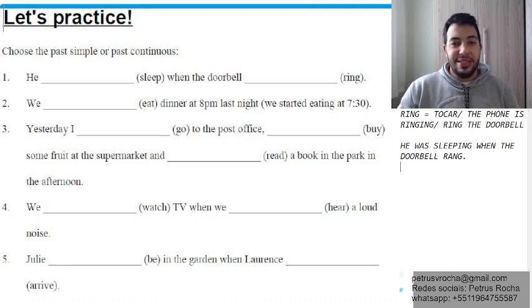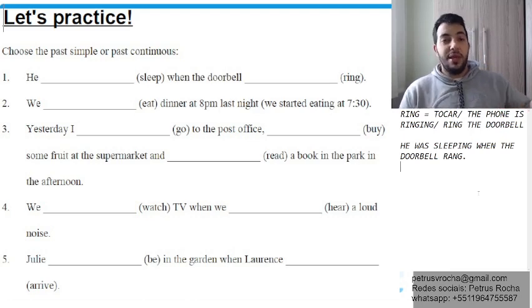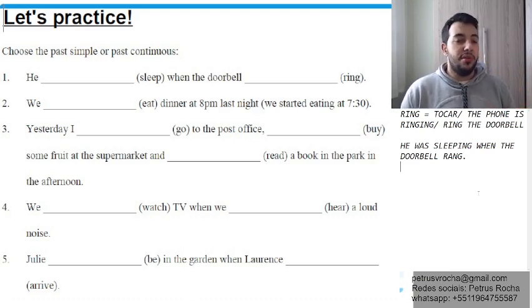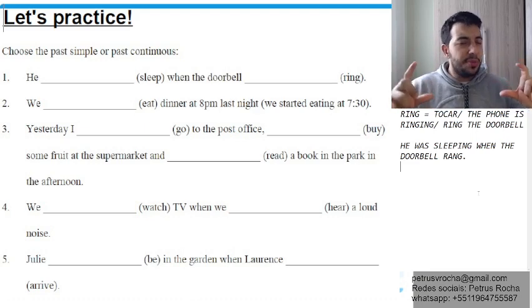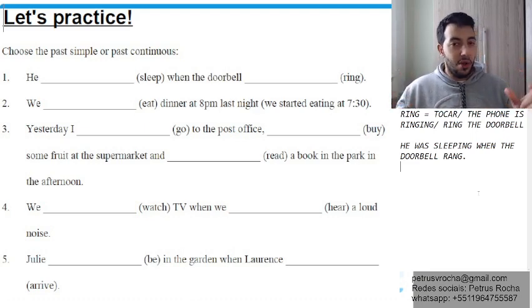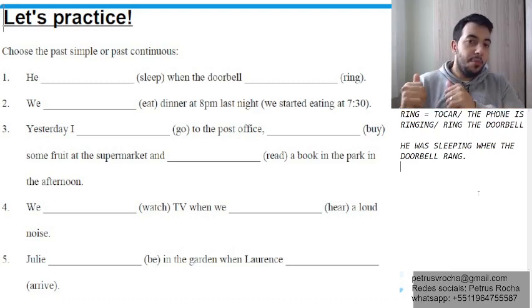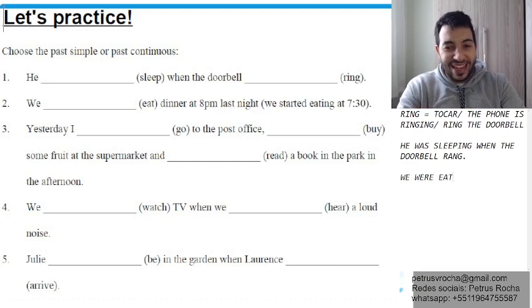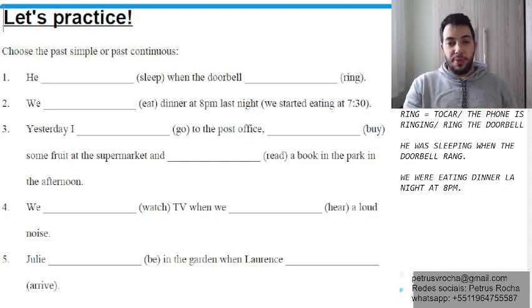Number two — we eat dinner. We eat dinner at 8pm last night. We started eating at 7pm. Temos um momento específico que é last night, às 8 da noite. É mais correto dizer: nós estávamos comendo um jantar às 8 horas na última noite. Indica uma ação que teve um progresso durante um tempo. Nesse caso, past continuous — nós estávamos comendo um jantar na noite passada, às 8 da noite.